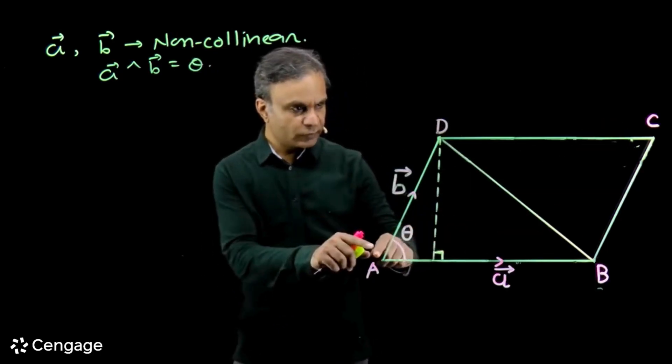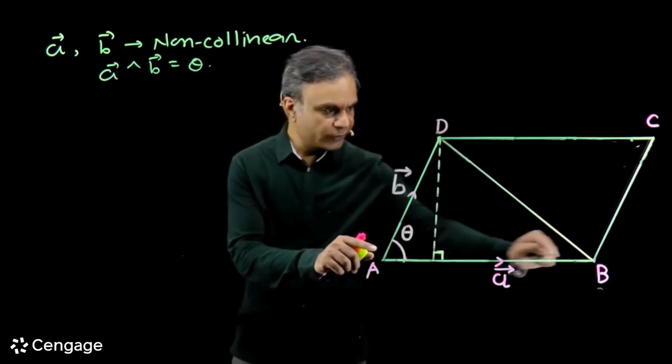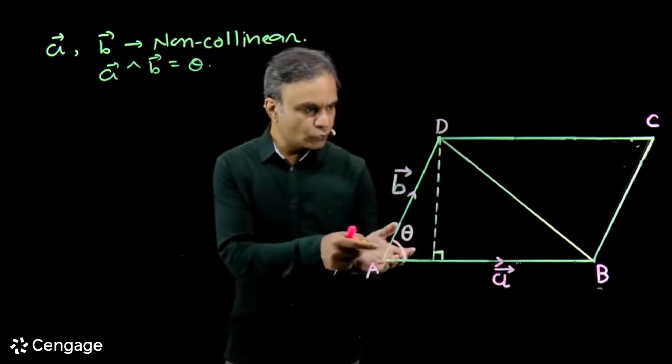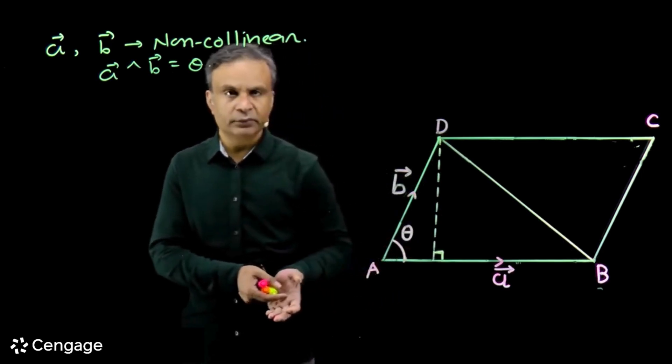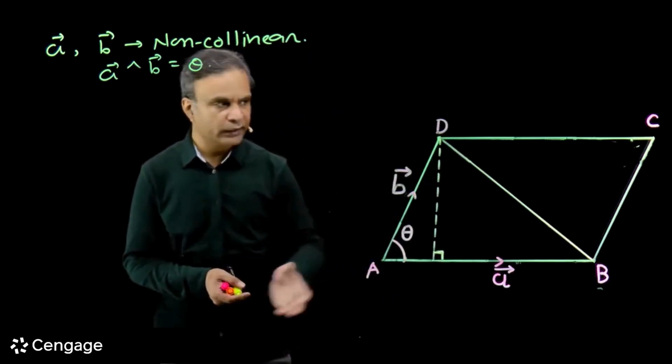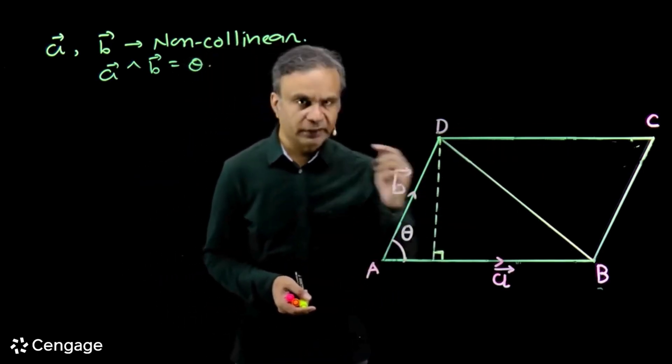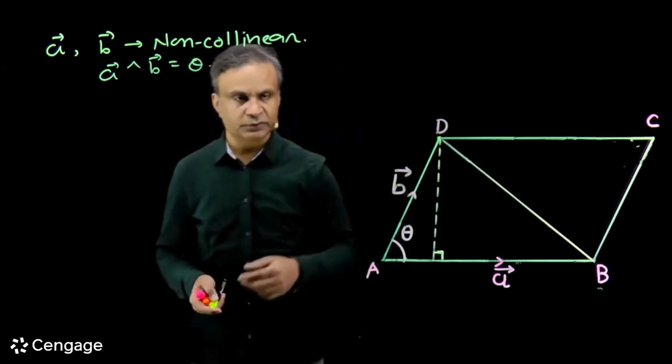We can also consider this triangle. Through non-collinear vectors, a triangle or parallelogram can be made in space.